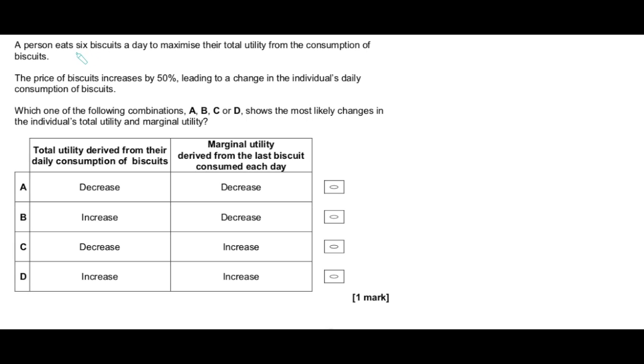So a person eats six biscuits a day to maximize their utility. Okay. So let's underline that. That's key. So they're eating six biscuits currently. That's their consumption. And now the price of biscuits increases by 50%. All right. That's important to know as well. And immediately I'm reading that and I'm thinking, okay, the price is going up. They're going to be consuming less. Law of demand. So less quantity consumed now, leading to a change in individual's daily consumption. We know it's going to fall.